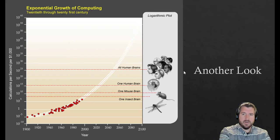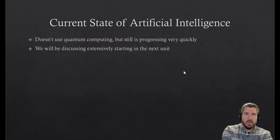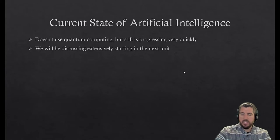So just to tee up next time: the current state of artificial intelligence. Because that's kind of what that graph entails, right? Is that graph is saying we are getting to the point where raw computational power is similar to a human brain. It doesn't use quantum computing—it just uses regular standard old computing—but it's progressing very quickly.